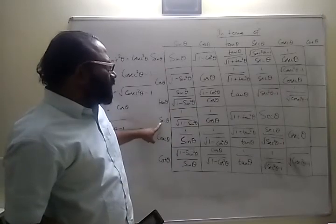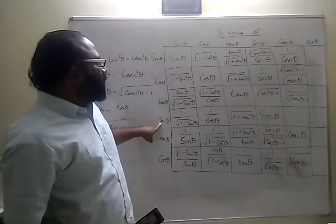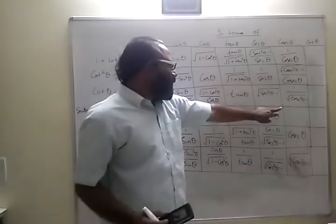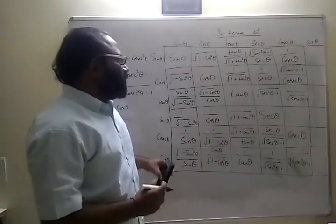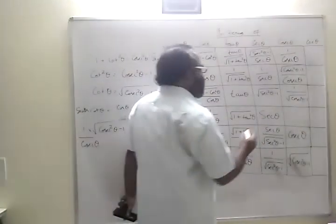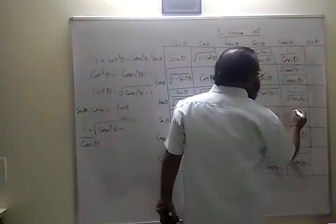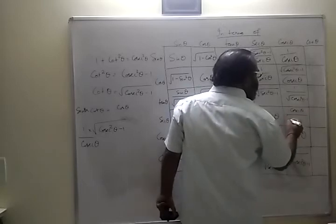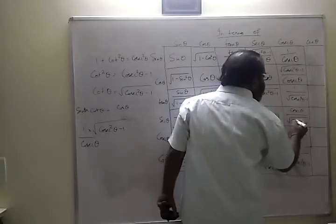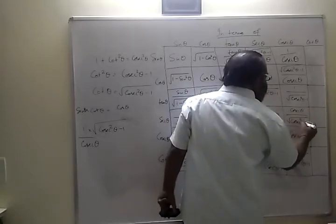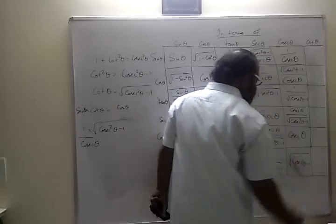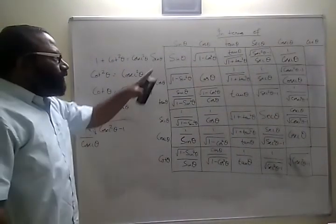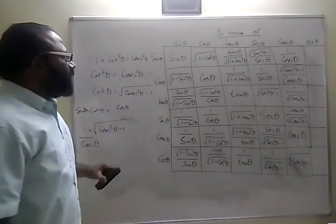Secant theta is 1 by cos theta, so I just write the reciprocal: secant theta equals cosecant theta by root of cosecant squared theta minus 1.